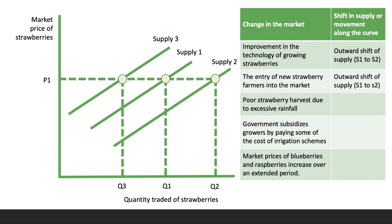The third change is a poor strawberry harvest due to low temperatures or excessive rainfall. Other things being equal — ceteris paribus — that's going to lead to an inward shift of supply from S1 to S3, because the yield will be less than expected and there'll be a shortage of strawberries on the market.